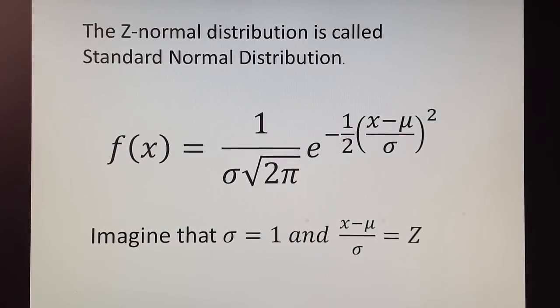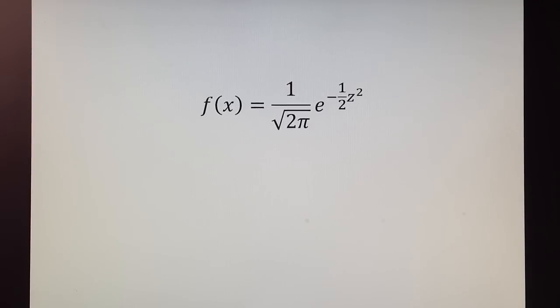Normal distribution in which standard deviation is 1 and x minus mu over sigma is z is called standard normal distribution. All scores, x scores, are standardized. And this is how the formula of standard normal distribution looks like.